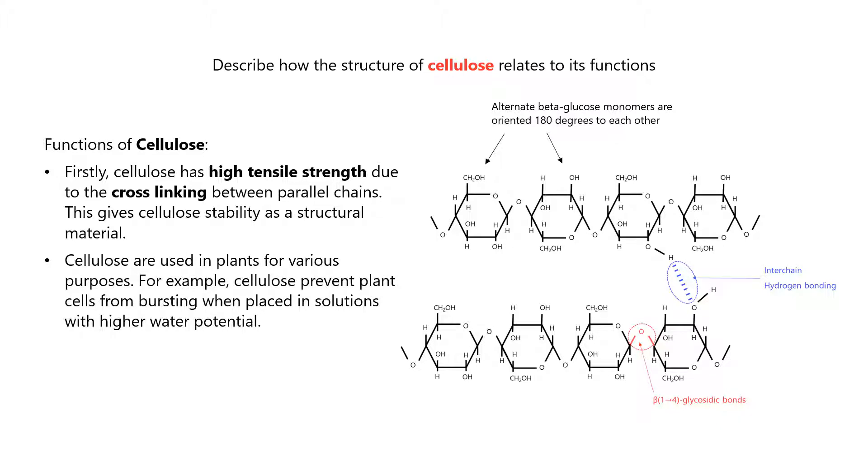Cellulose is used in plants for various purposes. For example, cellulose prevents plant cells from bursting when placed in solutions with higher water potential.